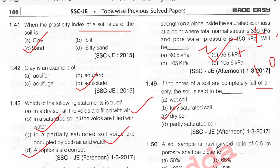A soil sample having void ratio 0.5 — its porosity will be: n = e / (1 + e) = 0.5 / (1 + 0.5) = 0.5 / 1.5 = 33 percentage. Option D.